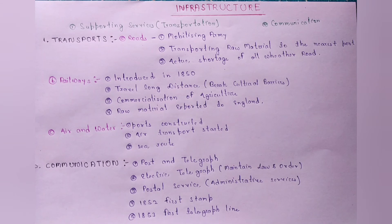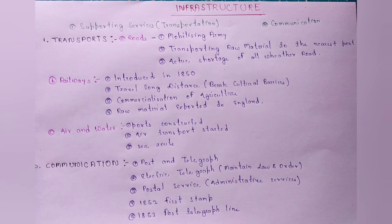लेकिन roadways में जो problem था वो ये था कि British ने all-weather roads नहीं बनाए थे। जब भी बारिश या ठंड का मौसम आता था तो उनका जो road था वो survive नहीं कर पाता था। तो all-weather roads का वहाँ shortage था। Second infrastructure है railways।